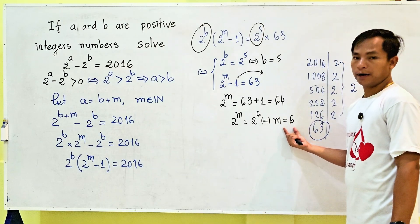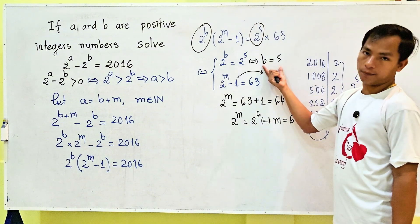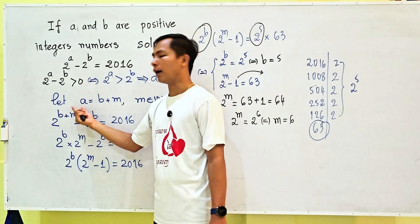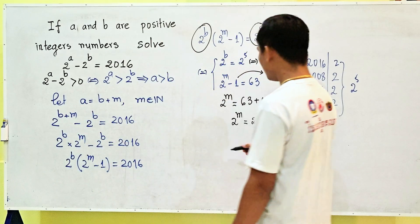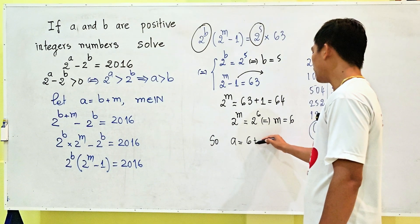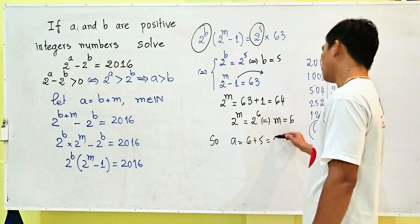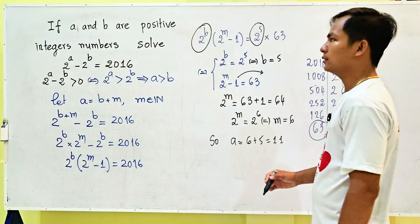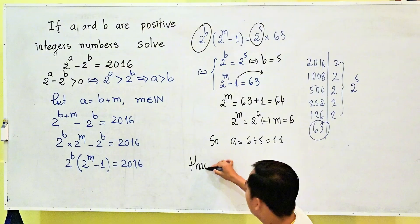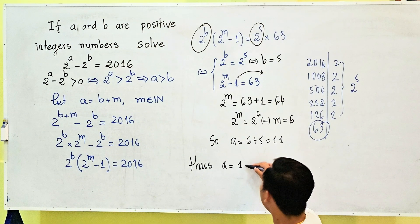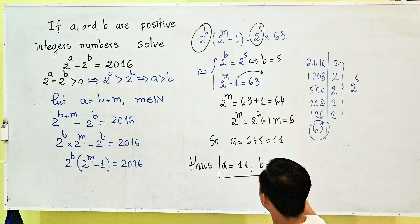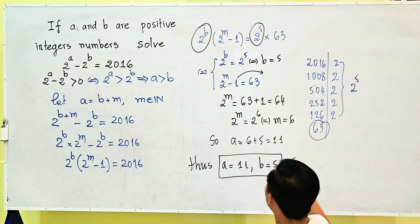Now we have the values of m and b, so we can find a. Since a = b + m, we get a = 5 + 6 = 11. Thus, a = 11 and b = 5 is our answer.